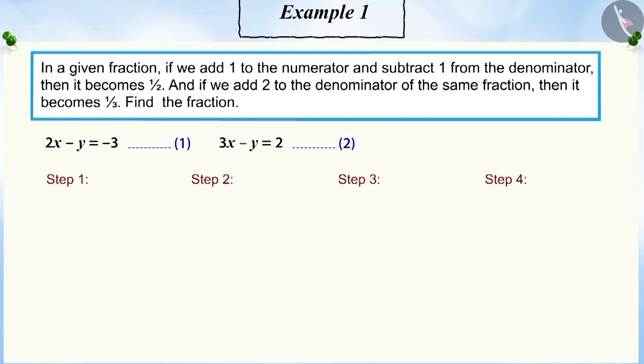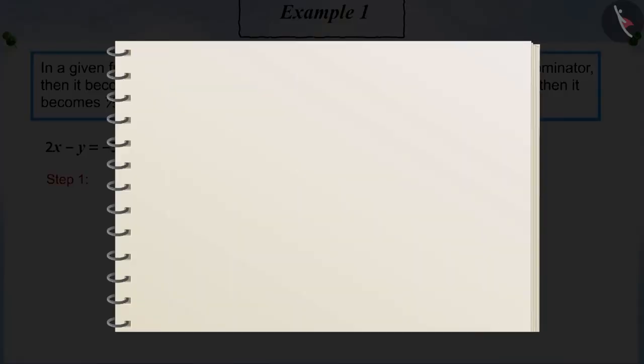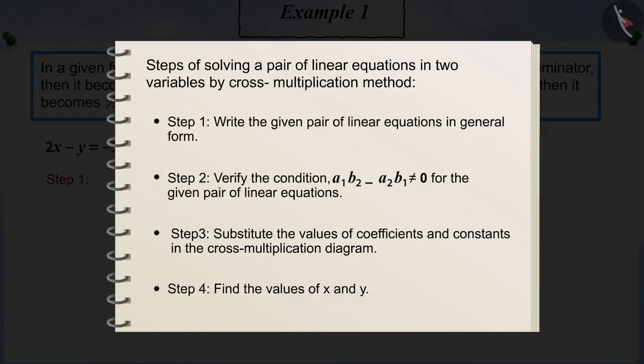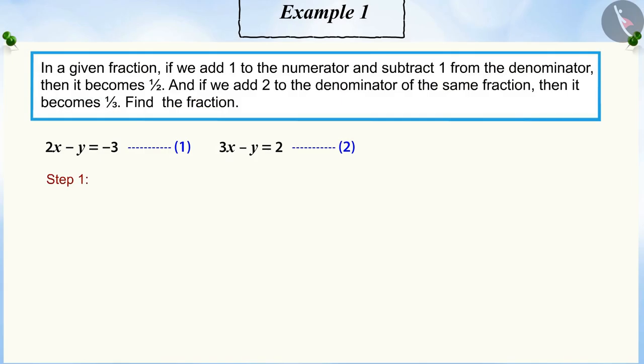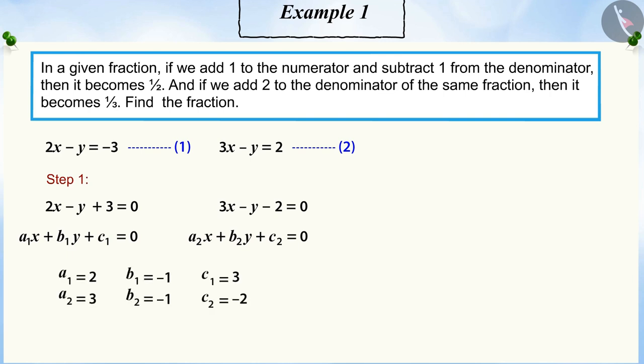Hope you remember that to solve a pair of linear equations by the cross-multiplication method, we follow a four-step process. Can you tell me what is to be done in the first step? Correct. First, we will write the given pair of equations in their general form. By doing so, we get the values of all the coefficients and constants.